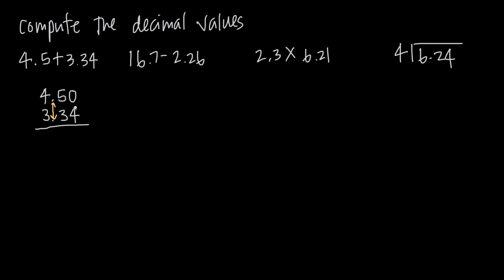So we add from the right-hand side like we normally would. 4 plus 0 gives us 4. 5 plus 3 gives us 8. We carry down our decimal place exactly in line with where it is here, and then 4 plus 3 gives us 7. So the result is 7.84.